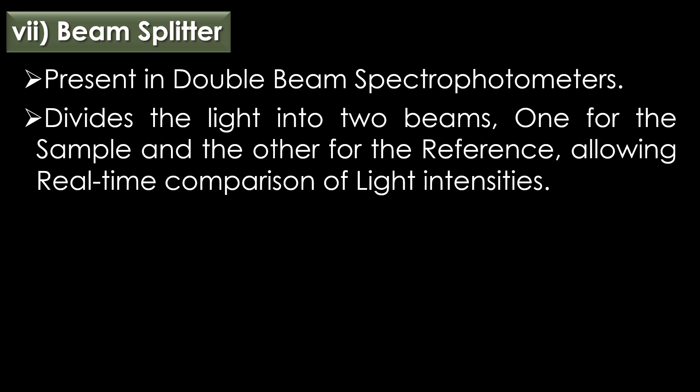Beam splitter: the beam splitter is present in double beam spectrophotometers. It divides the light into two beams — one for the sample and the other for the reference — allowing real-time comparison of light intensities.